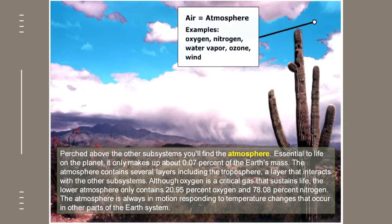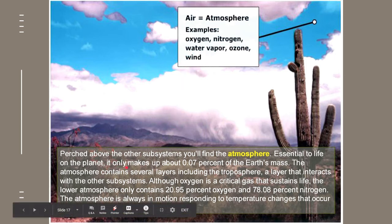Next would be the atmosphere. This is perched above the other subsystems. This layer of atmosphere is made up of the following gases: oxygen, nitrogen, water vapor, and ozone. This is also where wind currents are formed. It is essential to life because it contains all those layers that interact with other subsystems. Although oxygen is a critical gas, it is only found in the lower atmosphere, at around 21%, while most of the atmosphere — about 78% — is made up of nitrogen. The atmosphere is said to be always in motion, responding to the temperature changes that occur below it.